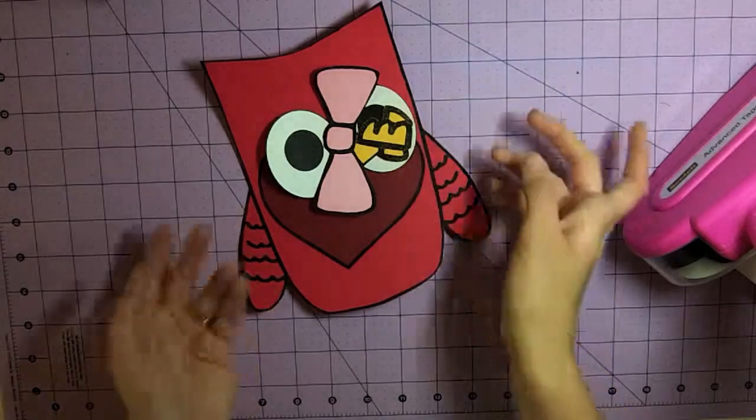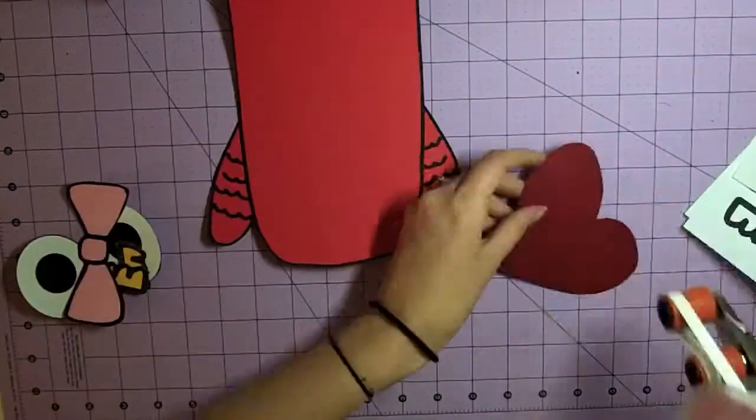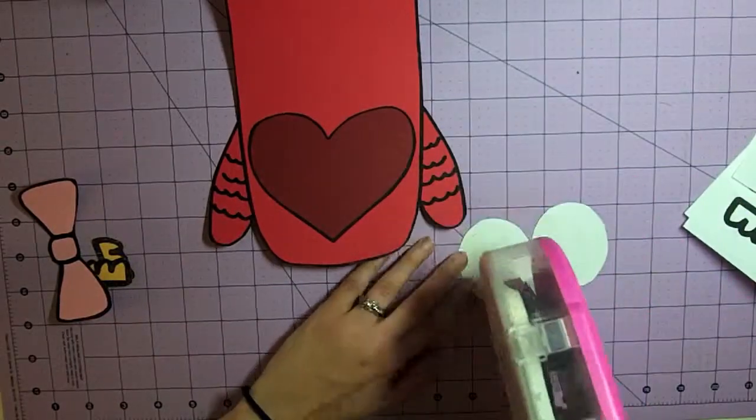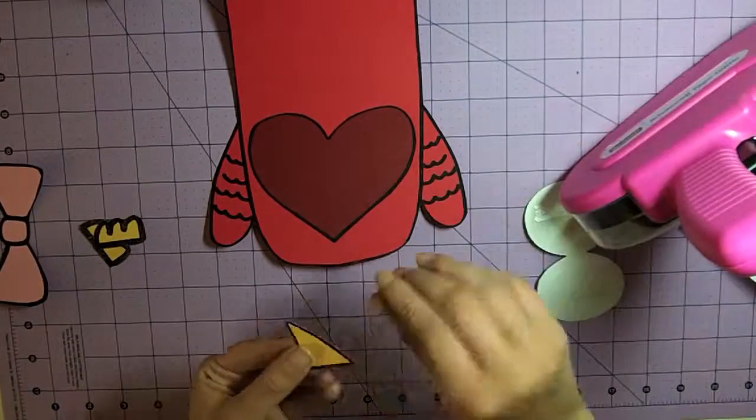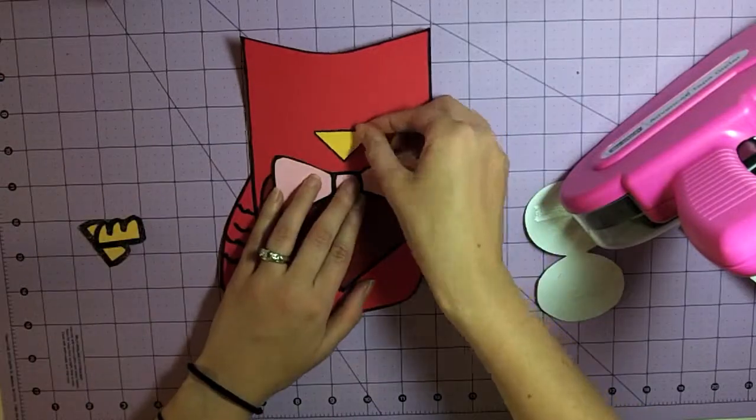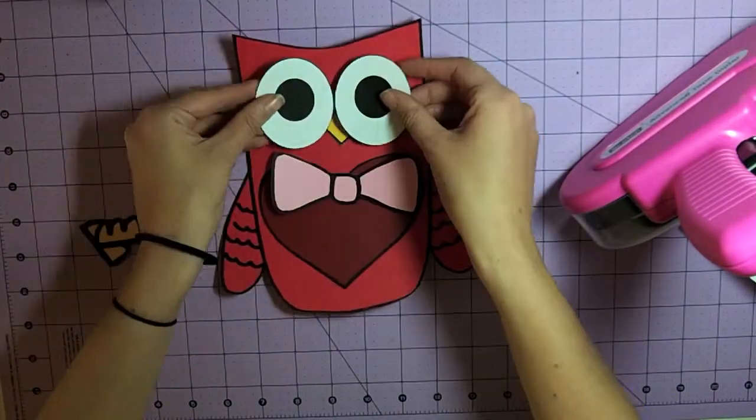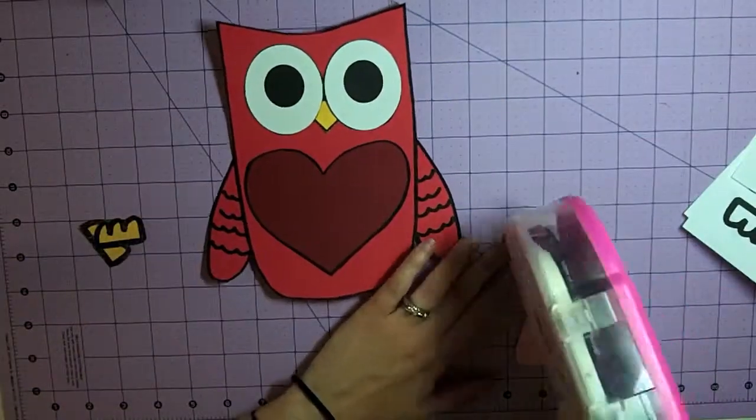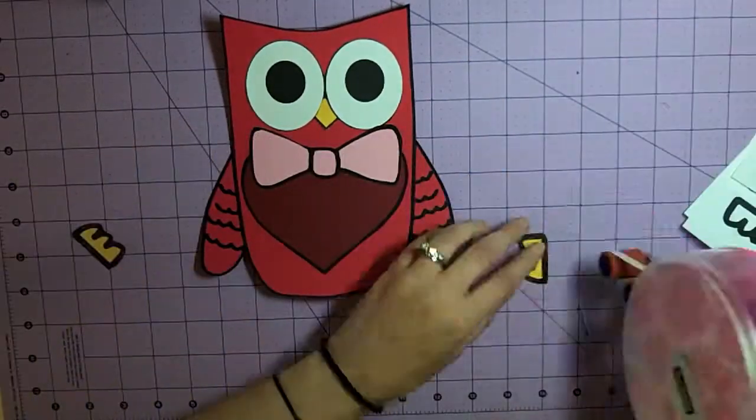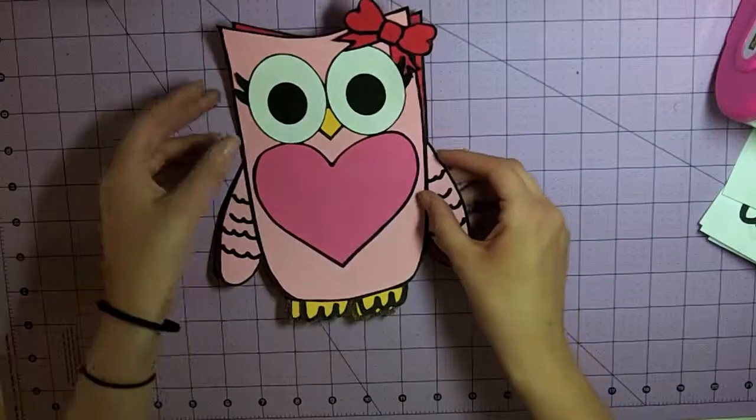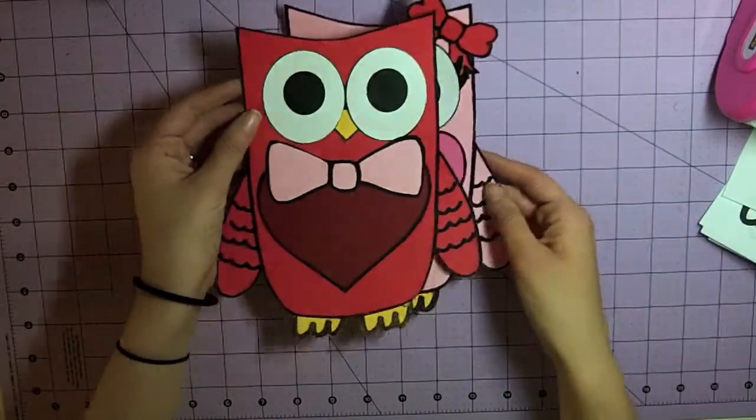So now we're going to go ahead and put together the boy. So now you have a girl owl and a boy owl.